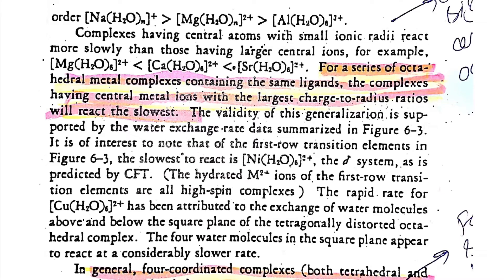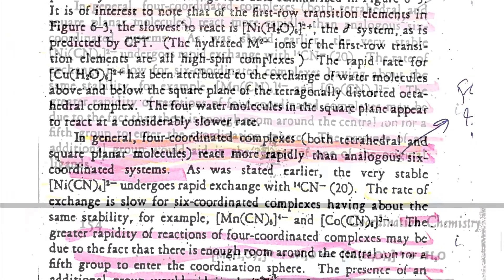The second factor is the size of the central metal atom or ion. A larger metal ion has lower charge density — charge spread over a greater area — making it easier to break the metal-ligand bond. Therefore, the lability order among alkaline earth metals is Sr²⁺ > Ca²⁺ > Mg²⁺. Magnesium is smallest with +2 charge concentrated in a small area, giving high charge density, strongly attracting ligands and making bond breaking most difficult.